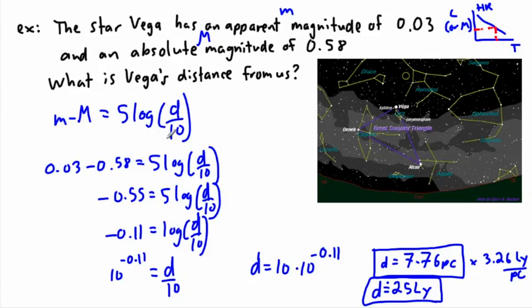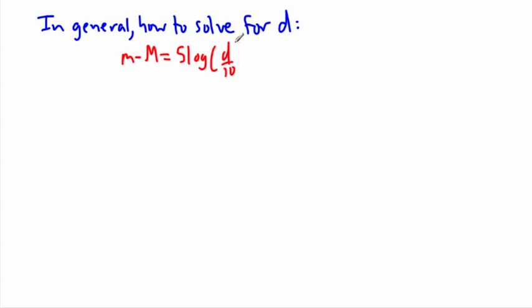So that's how we can solve for something. Now you might wonder, is there a way to solve for D in general all the time? And yes, there certainly is. So in general, how to solve for D. I always like to have an equation in general. I don't memorize this, I just figure it out as I go along. So I want to have m minus M equals 5 log of D over 10. What I'm going to attempt to do then is to solve for D. So the very first thing I need to do is get rid of the 5. So I divide both sides by 5. So I have m minus M over 5 equals log of D over 10.